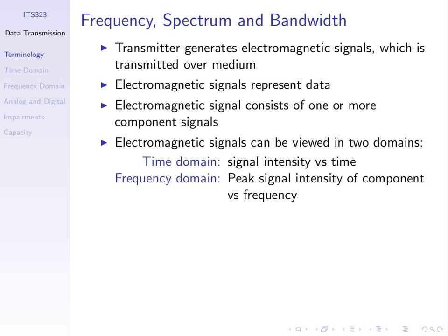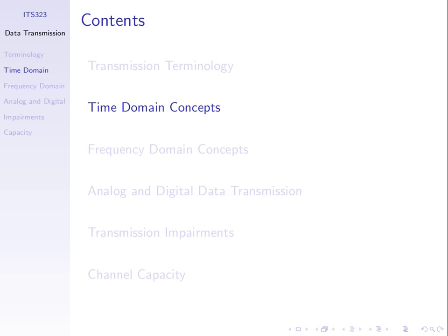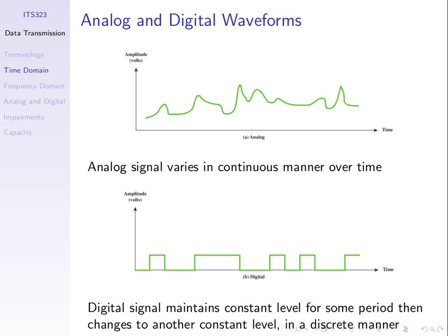We can view signals from two different perspectives: the time domain and the frequency domain. We'll introduce the frequency domain at the end of the lecture. We can differentiate between analog and digital waveforms or signals. Analog is continuously varying over time, while a digital signal maintains some level and instantaneously changes to some other fixed level — discrete changes.